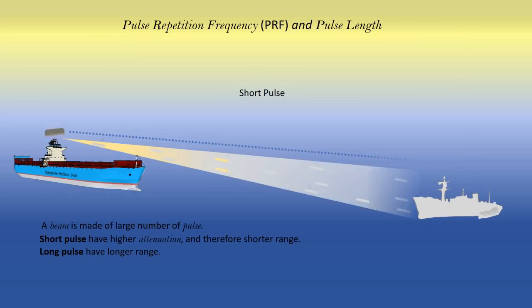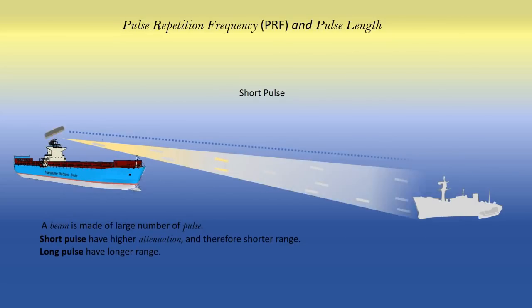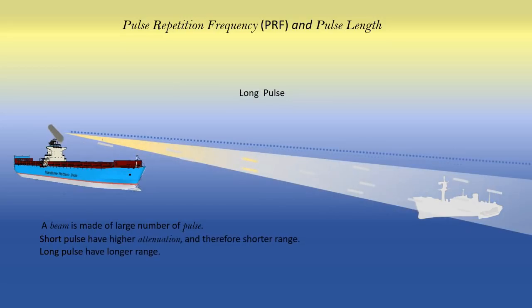The pulse repetition frequency, or PRF, is the number of times the beam is generated in a unit second. Inside the beam, there are grains of microwave pulse of different lengths. A short pulse has a smaller pulse length, and hence lesser energy, so it has higher attenuation and therefore a smaller outreach. Whereas the long pulse grains have more energy and therefore they travel a longer distance.